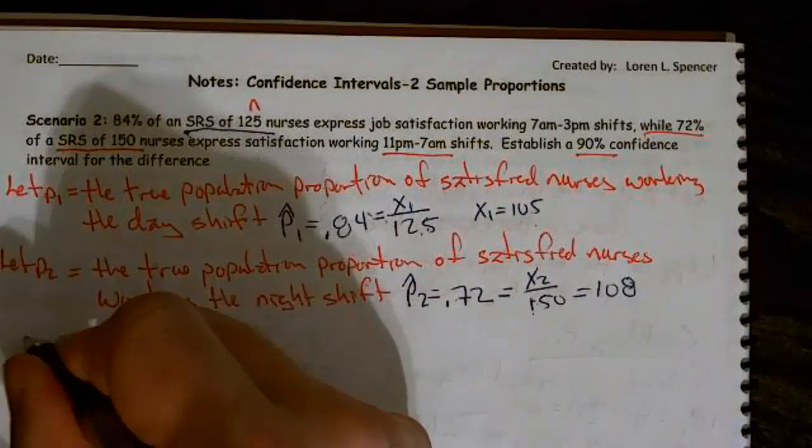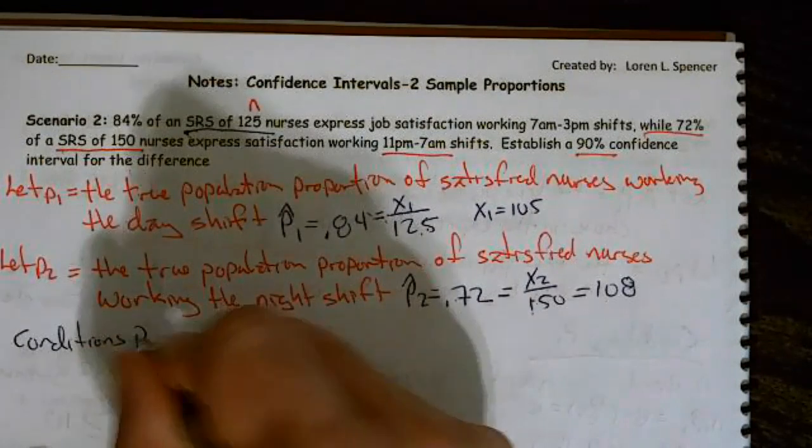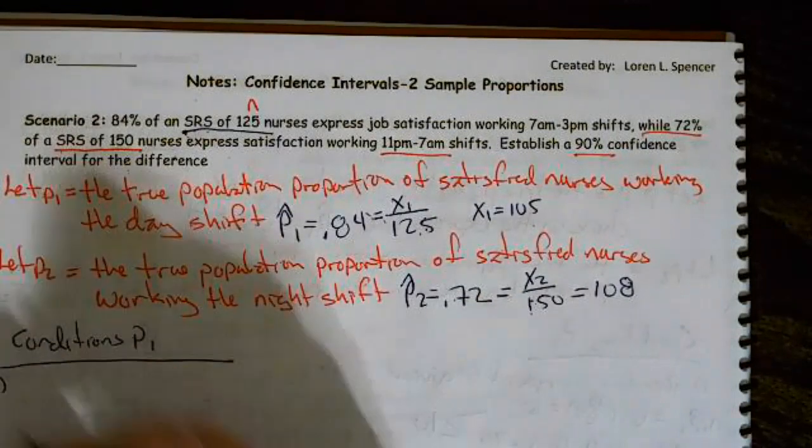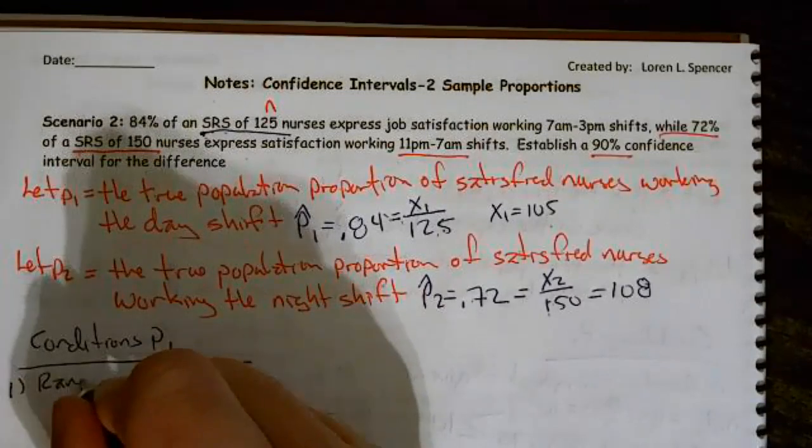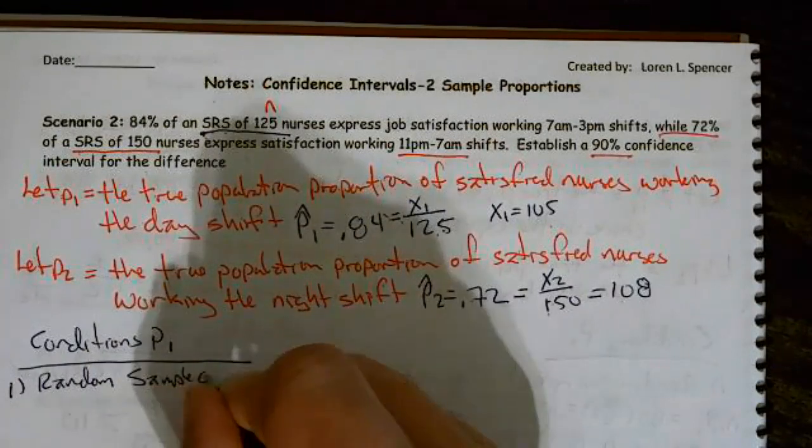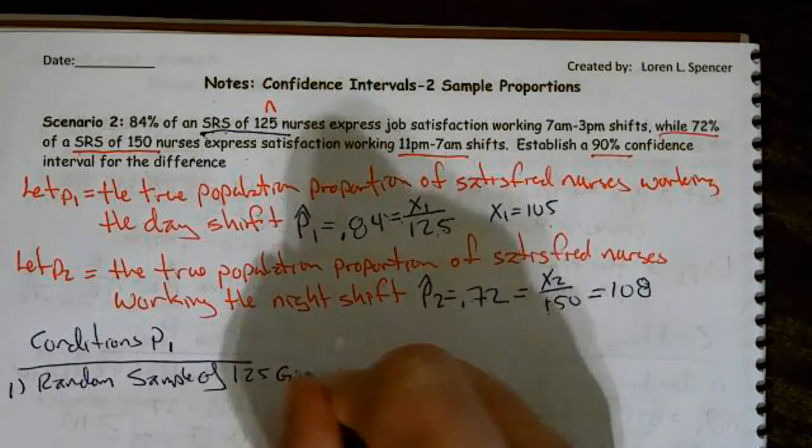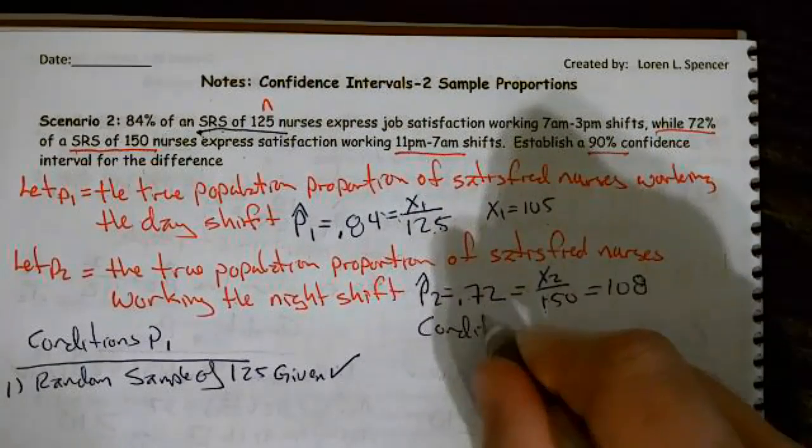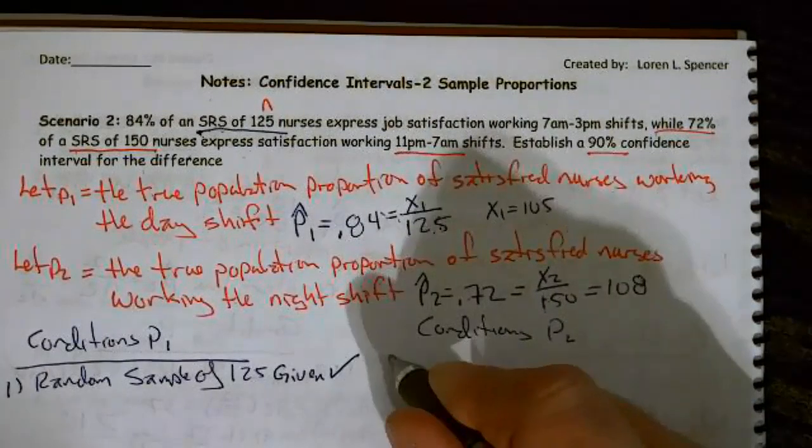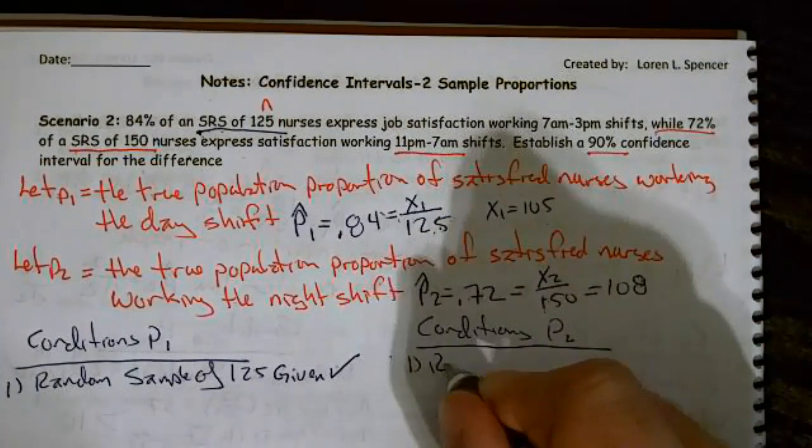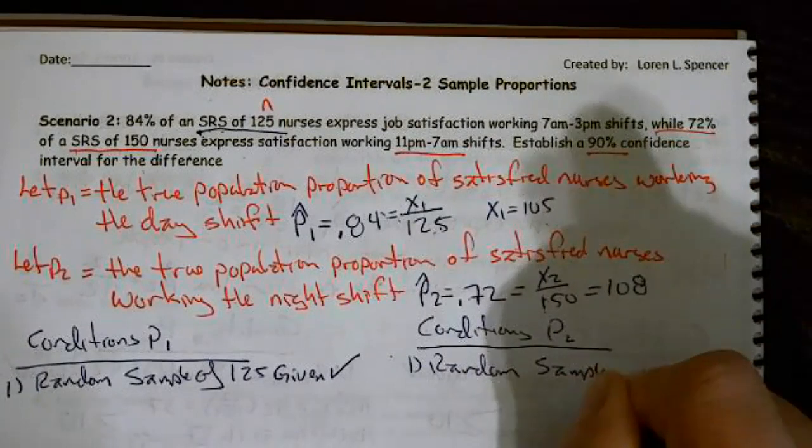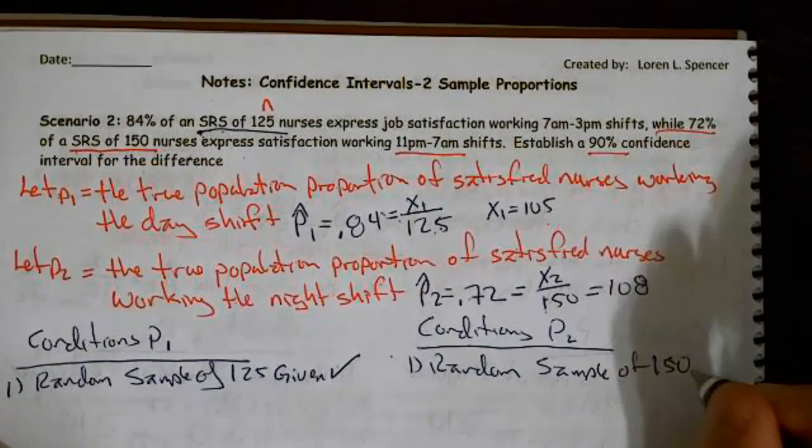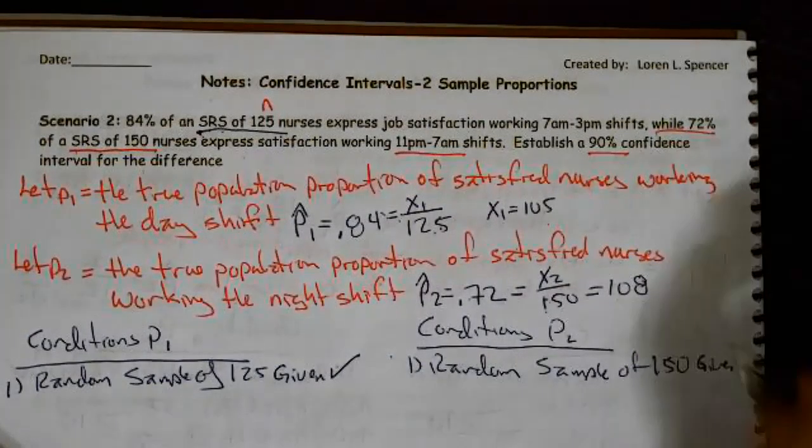Our conditions. So we have to do conditions for both. So conditions for P1. They told us a random sample of 125, so I'm going to write that down. Random sample of 125 given. And on P2, I have to do the same thing. Conditions P2. Random sample of, in this case, 150. And that was given. I'll put a check by that.